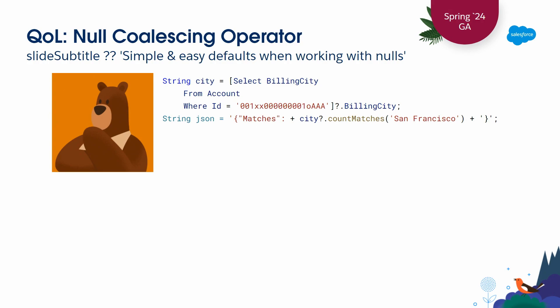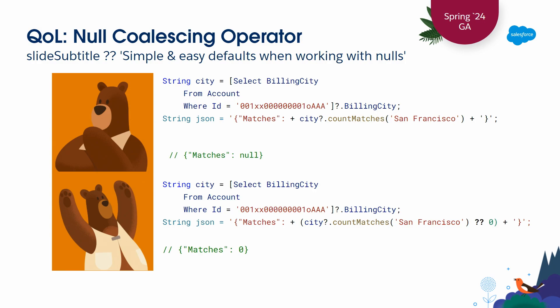Here's an example: we run a SOQL query and count the number of times billing city equals San Francisco. But if billing city is null, we get back a literal null in our JSON, which may not be compliant with the schema we've told our clients about. We could add an if statement to handle the fallback - it's not hard, but it's ugly. With the null coalescing operator, all we do is append double question mark zero to make sure we always give back a number. Hopefully it makes your life just a little bit simpler.